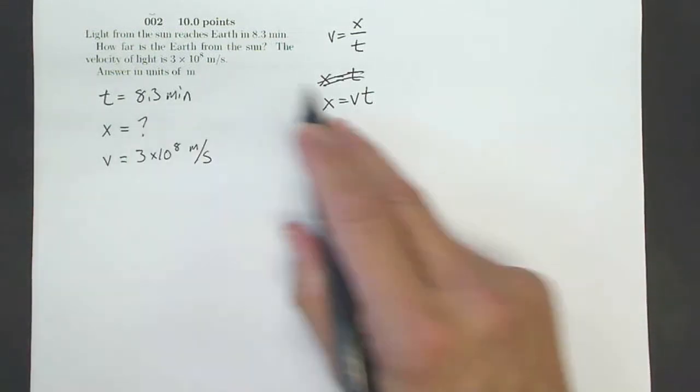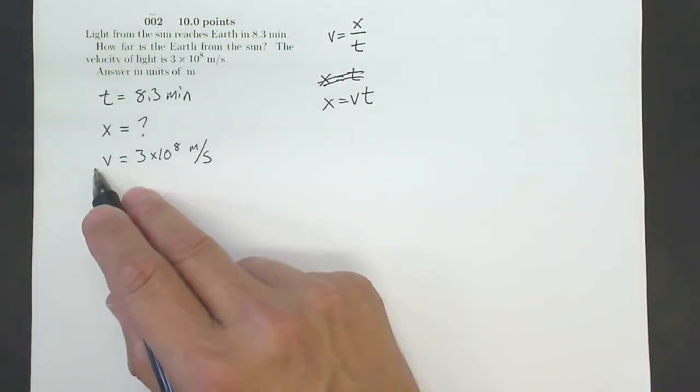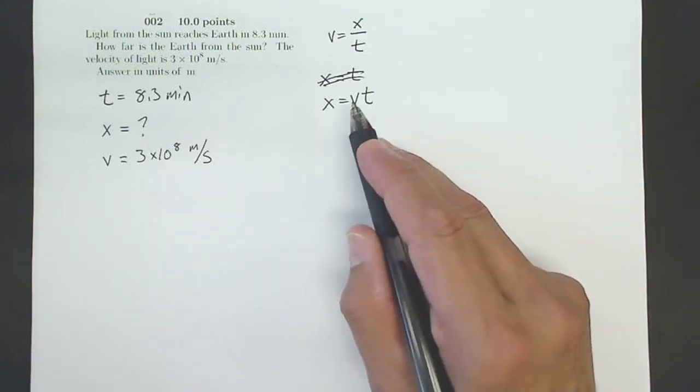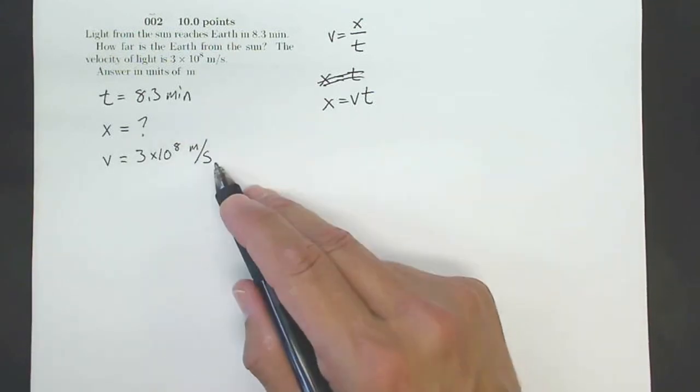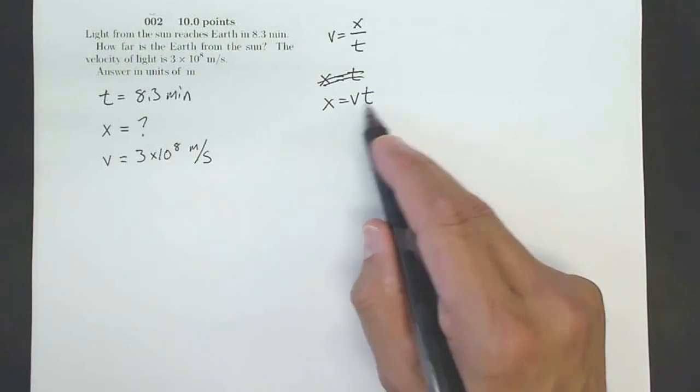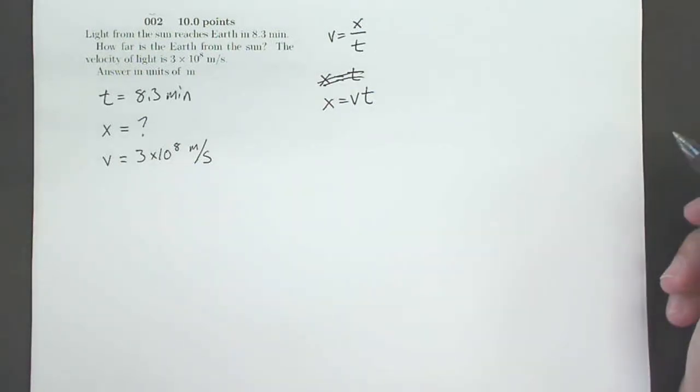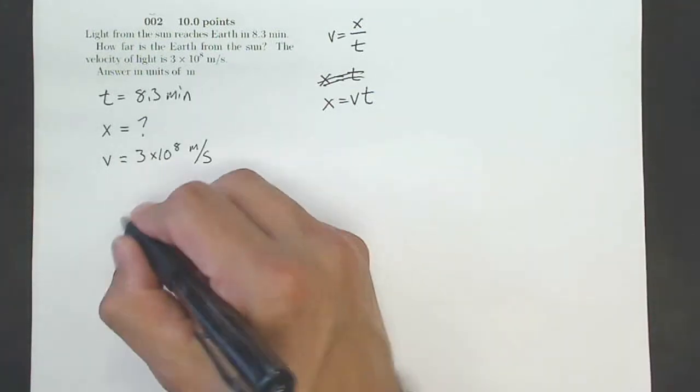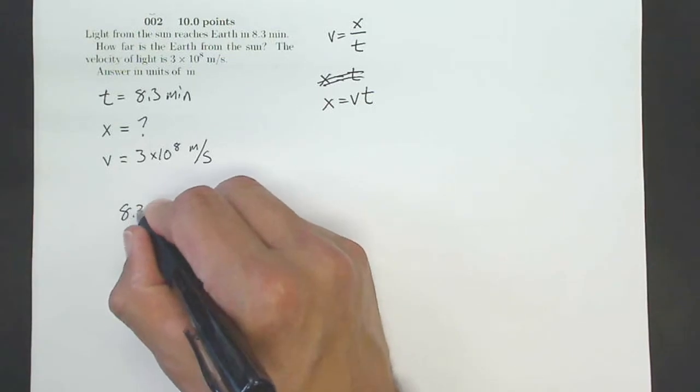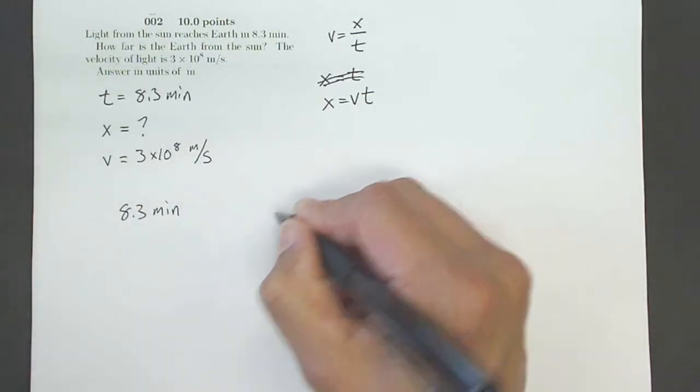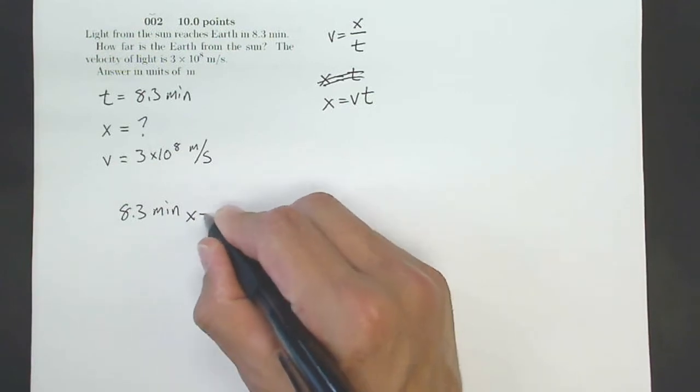Now I can plug in time of 8.3 minutes. I can plug in velocity of 3 times 10 to the 8th meters per second. The problem is this is minutes. This is seconds. Minutes and seconds will not cancel out when I multiply those together. So I'm going to take my time of 8.3 minutes and I'm going to convert it into seconds.